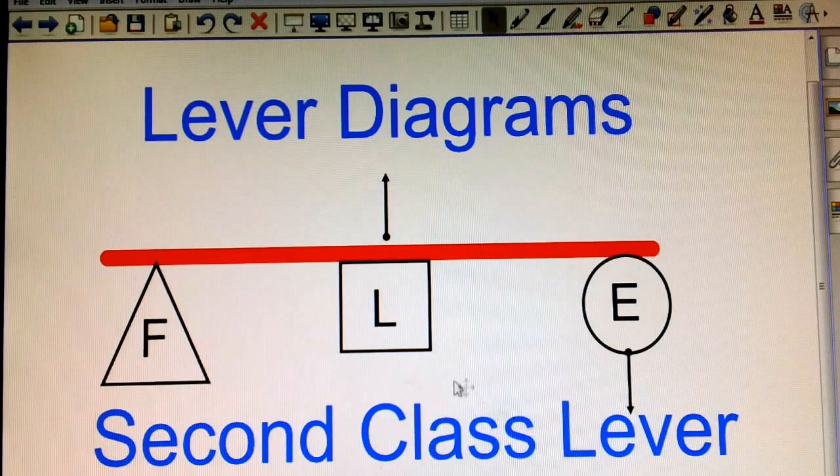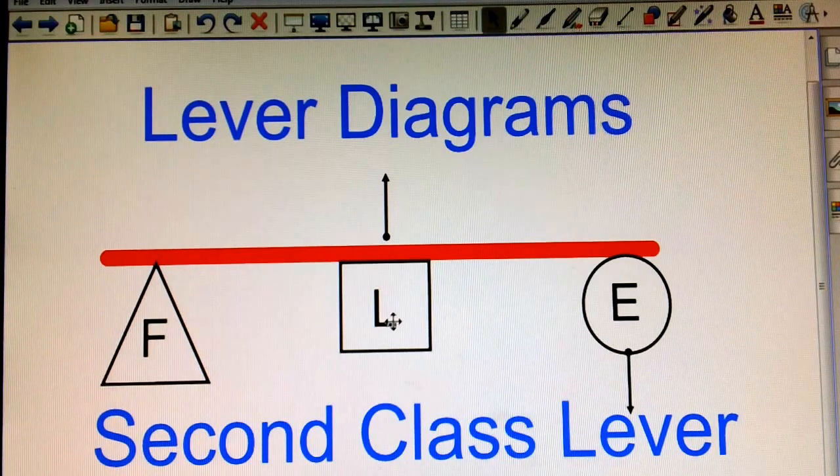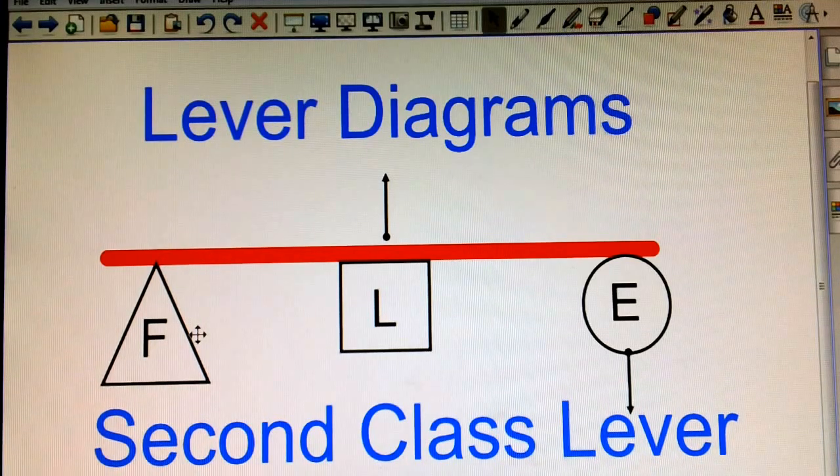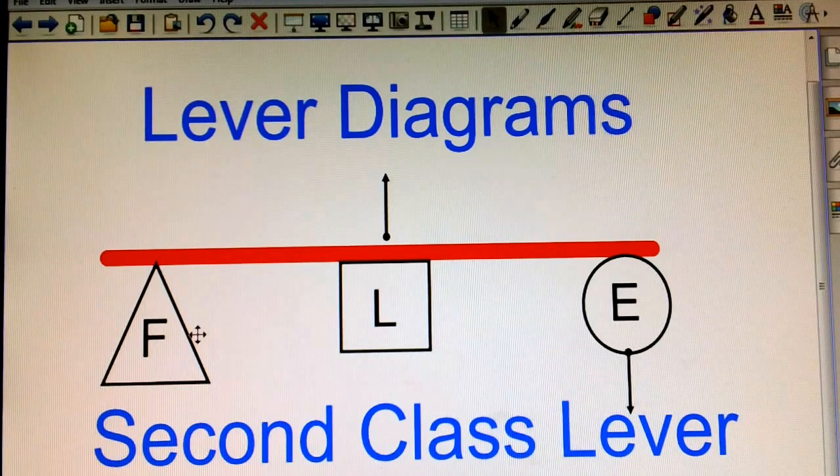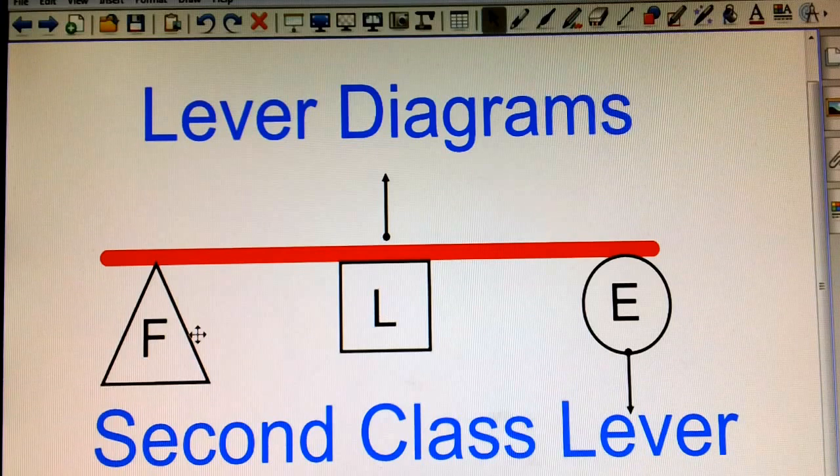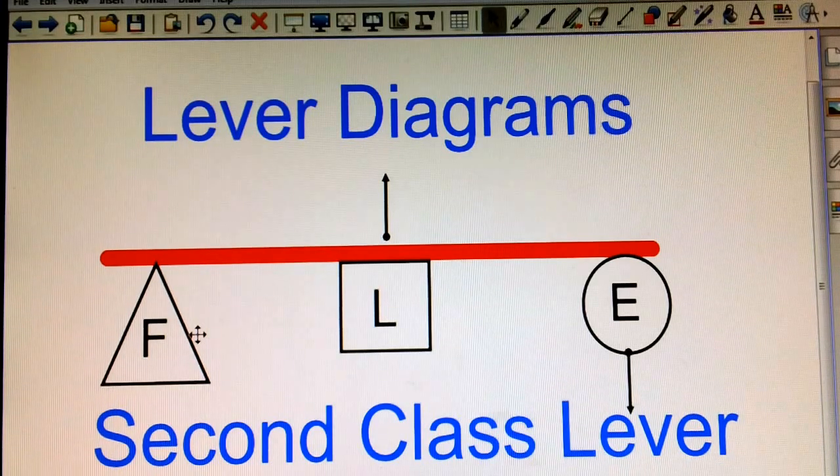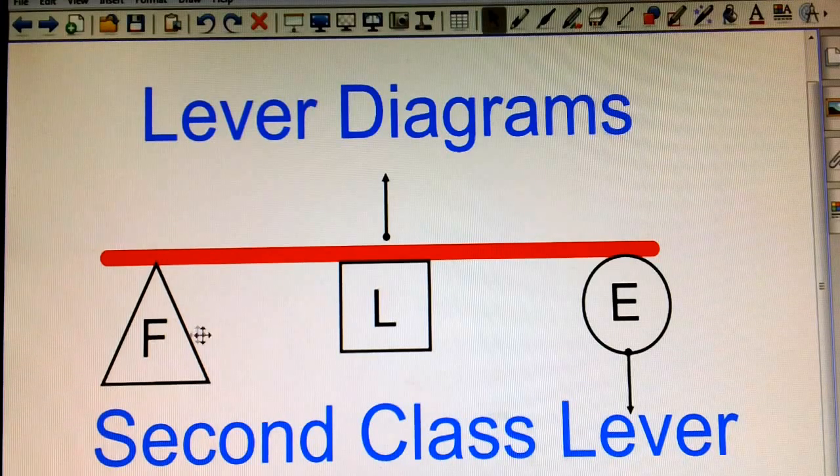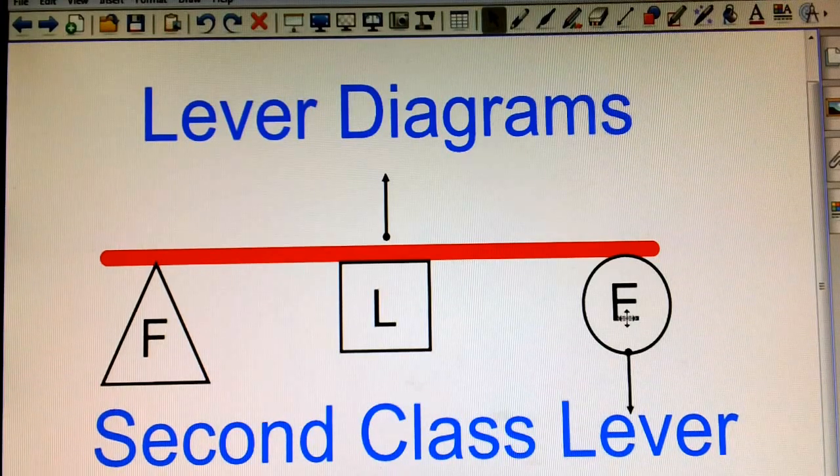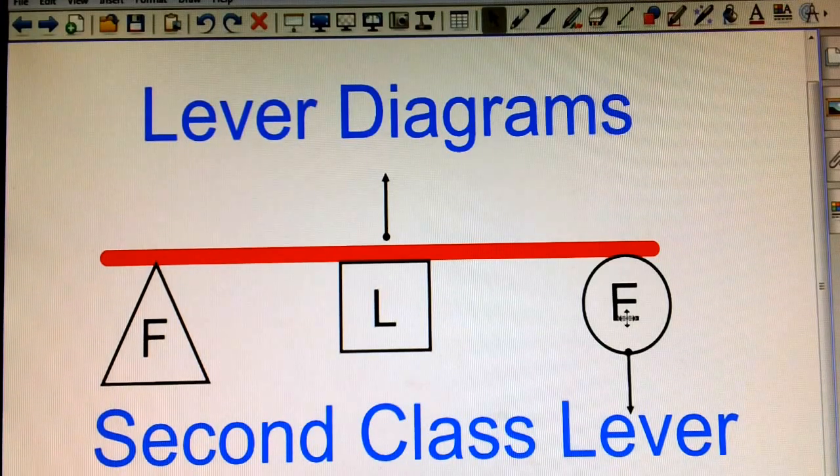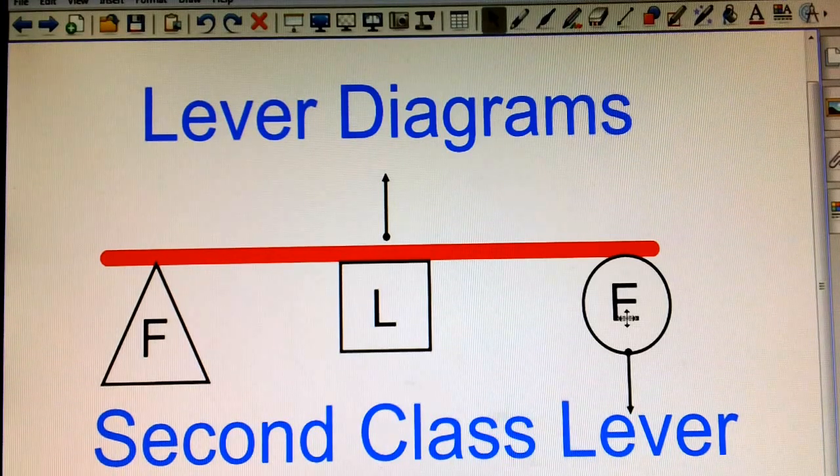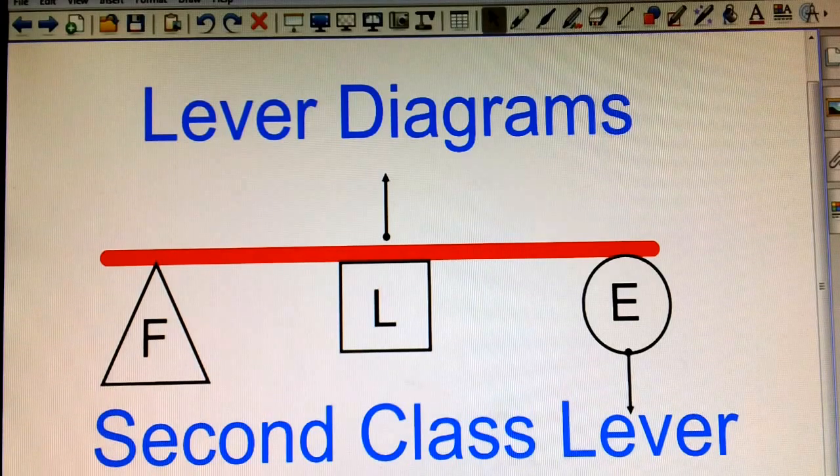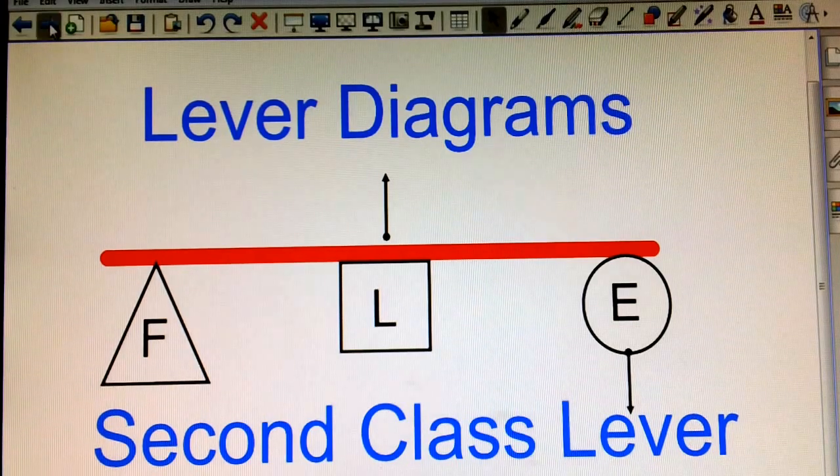Another one might be like a paper cutter, where the load would actually be the paper. You could think of the fulcrum as the pivot point where the blade attaches onto the base of the paper cutter. And then the effort, obviously, is typically where you apply your hands. So anytime you think about where I put my hands on a lever, that's probably where your effort is being applied. So this is a second class lever and how it would look diagrammed.